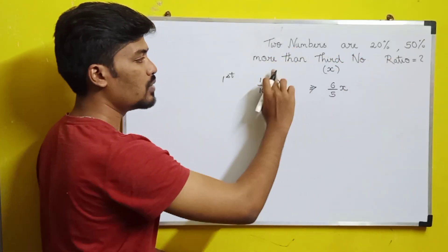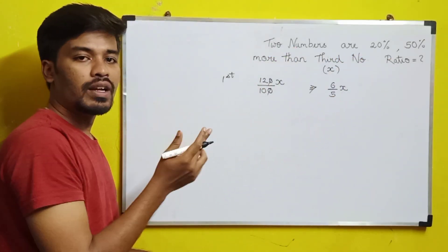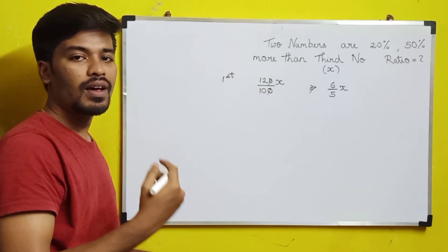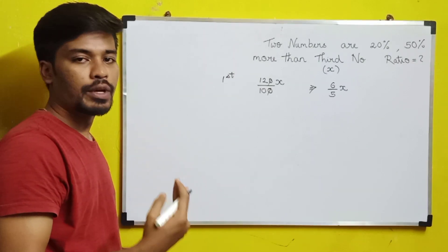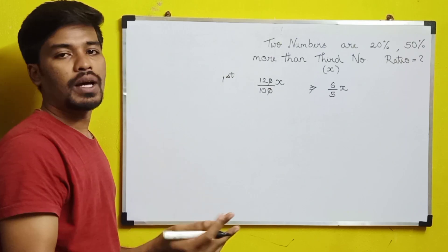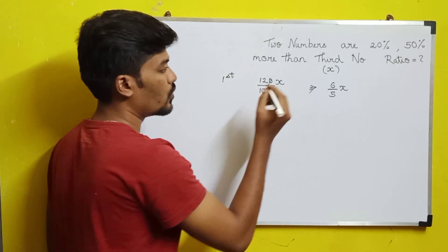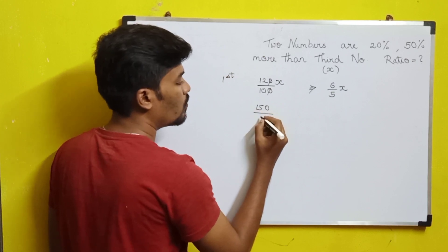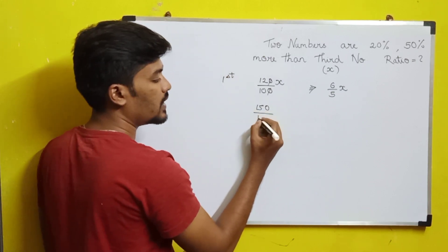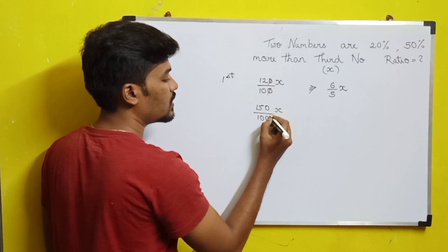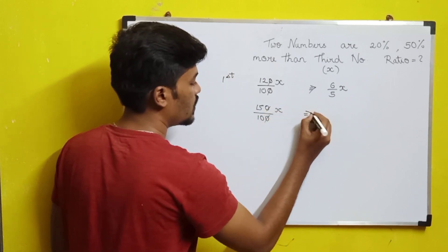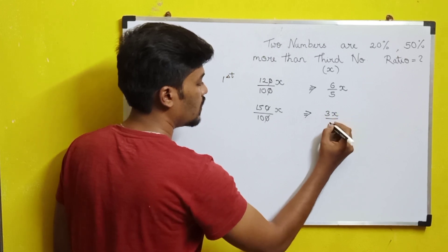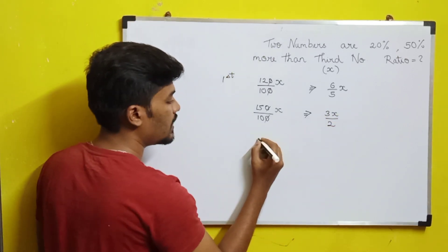The second number is 50% more than the third number, so it is 150% of X. Simplifying, 150% equals 3/2, so the second number is 3X/2.